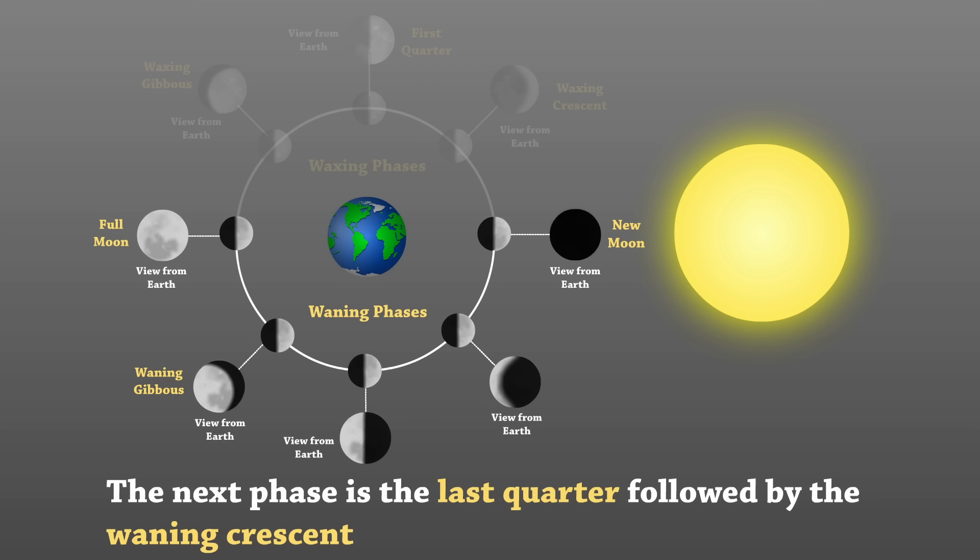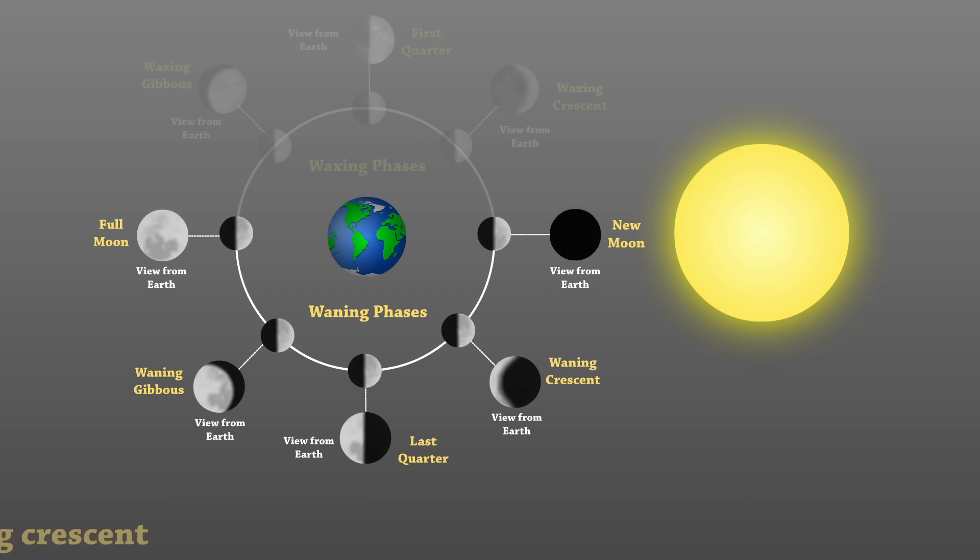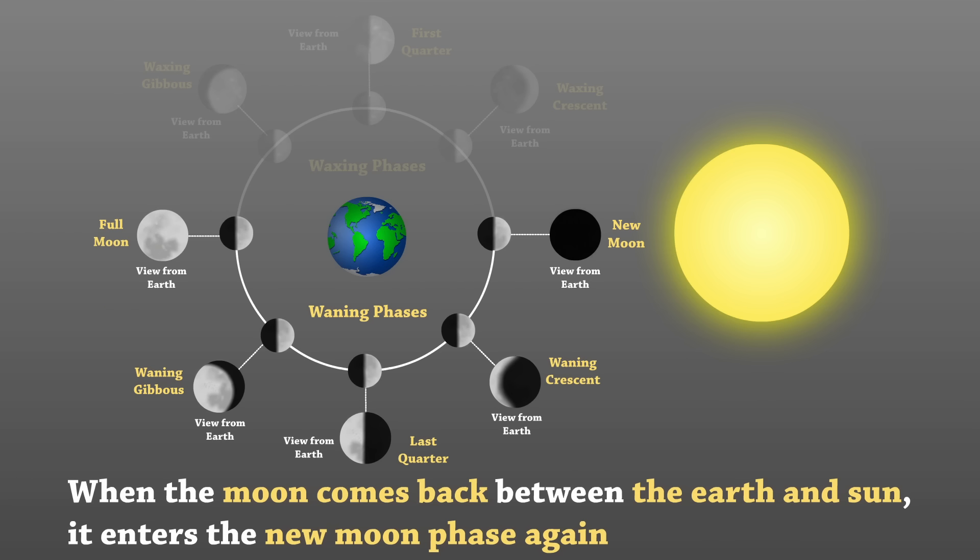The next phase is the last quarter, followed by the waning crescent. When the moon comes back between the Earth and the Sun, it enters the new moon phase again.